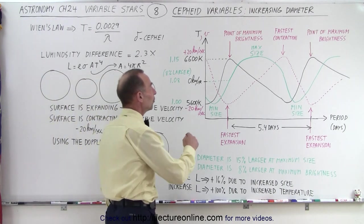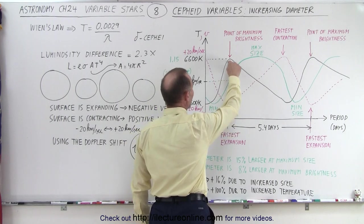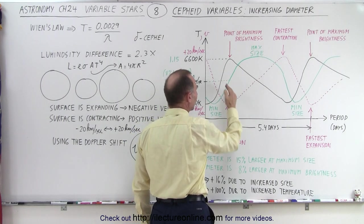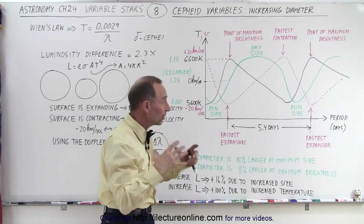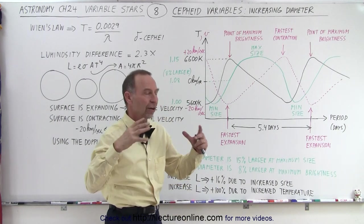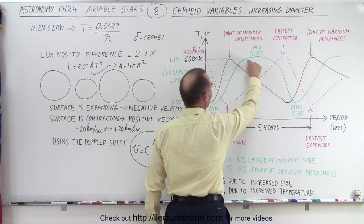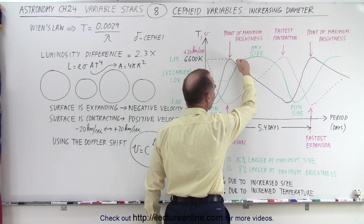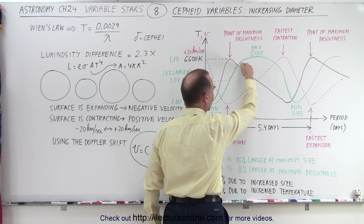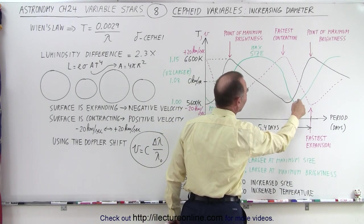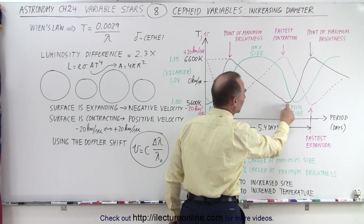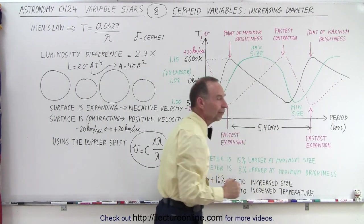And take a look at it. Notice that the point of maximum brightness occurs at the point of the fastest increase of the star size, but not the point when the star is at its largest size. It takes a while before the star gets to its largest size. By then, the intensity or the luminosity has reduced by quite a bit. By the time we get to the minimum size, that's when we already are past the minimum point or the lowest point of luminosity.